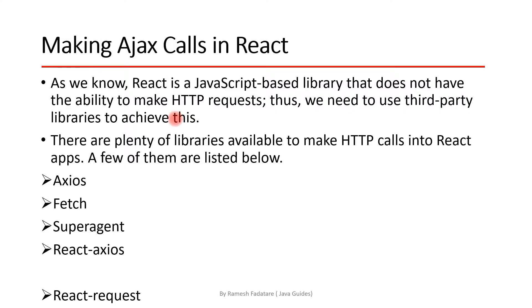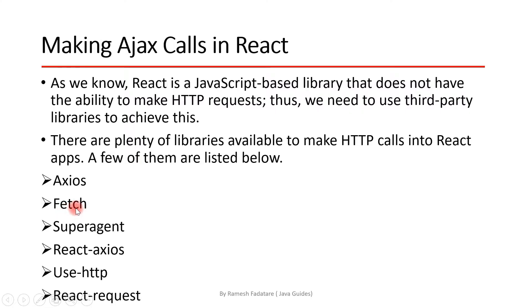There are plenty of libraries available to make HTTP calls in React applications. Here are the popular ones: in the previous video we used Axios HTTP library. In this video we are looking at using Fetch API. Other options include SuperAgent, React Axios, use-HTTP, and React Request — these are a few HTTP libraries we can use with React to make AJAX calls or REST API calls.